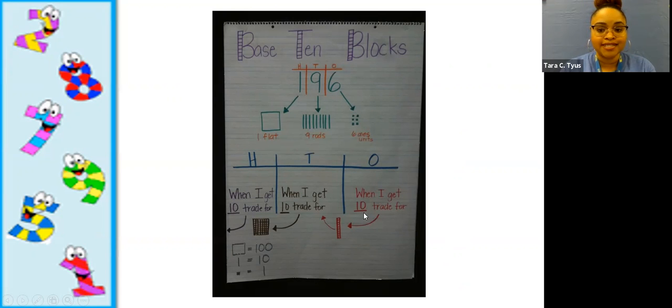And they know that when we get 10 ones, they trade it for a rod. When we get 10 rods, they will learn that you trade it for 100. So if they need help, just come back to this video and look at the base 10 blocks to help them.